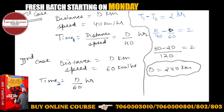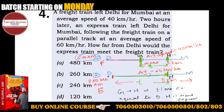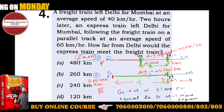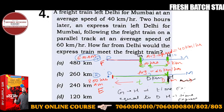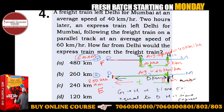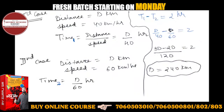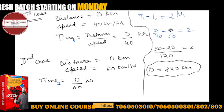So the distance traveled is 240 kilometers — the express train meets the freight train at 240 km from Delhi. The key hint to remember: the time difference between the two trains is 2 hours. Very simple, very easy — once you know that the time difference is given as 2 hours, the rest follows directly.